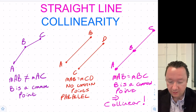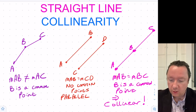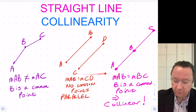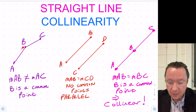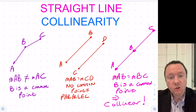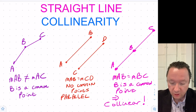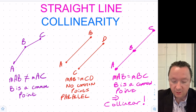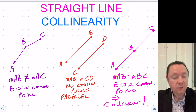Straight line, collinearity. So we're going to look at today what collinearity is. If we look at three points here — A, B, C — they're not in a straight line with each other. You can see that the gradient between A and B is clearly not the same as the gradient between B and C. B is a common point, but we're not on a straight line clearly.